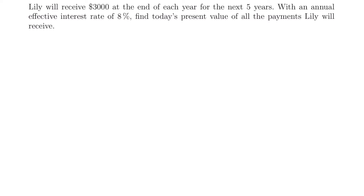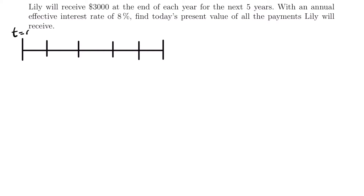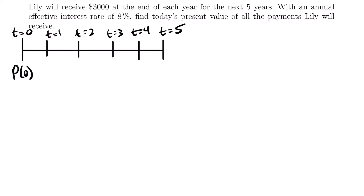She's going to get a total of five payments over five years. Since we're working with multiple payments, let's draw a timeline. The timeline starts at time equals zero, and our next marks are time equals 1, 2, 3, 4, all the way up to time equals 5. We want to know her present value — the deposit at time equals zero — and then in each year she's going to receive $3,000 at each tick mark.